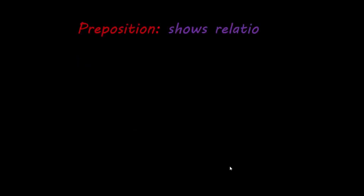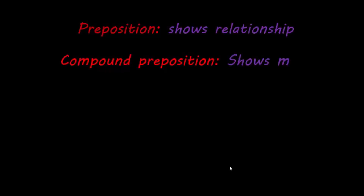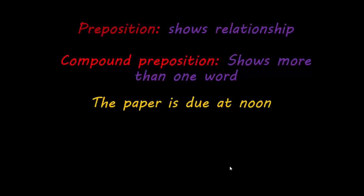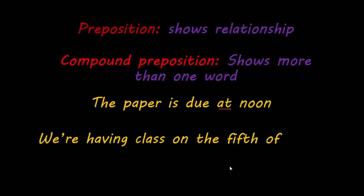Next, we're going to discuss the preposition. A preposition shows the relationship of a noun or pronoun to some other word in the sentence. A compound preposition uses more than one word. For example, 'The paper is due at noon' — at is your preposition. Or, 'We're having class on the 5th of October' — on is your preposition.